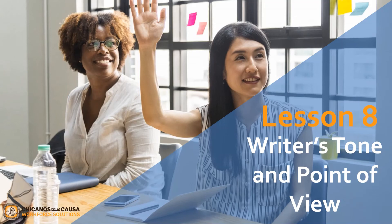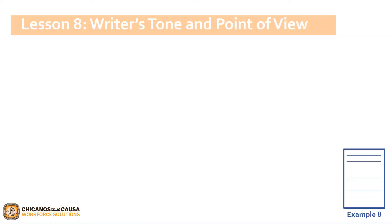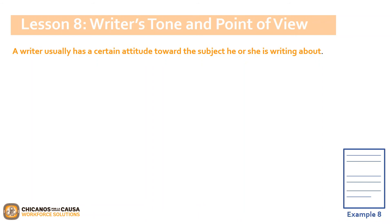We are at our second to last lesson — Lesson 8: Writer's Tone and Point of View. A writer usually has a certain attitude toward the subject he or she is writing about. To determine tone, look at word choice and manner of expression and ask yourself: how would the writer sound reading this piece? This attitude is the tone of the piece — it is not directly stated and must be sensed by the reader. On the other hand, the point of view of a piece is where the author is coming from. The writer's background and experiences may affect her or his opinions.